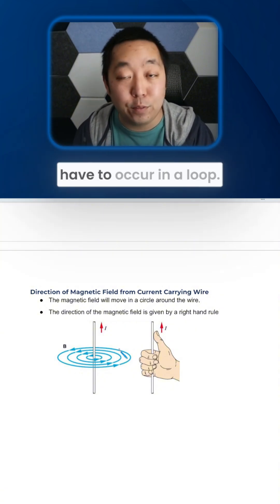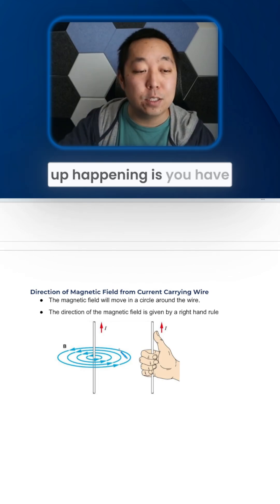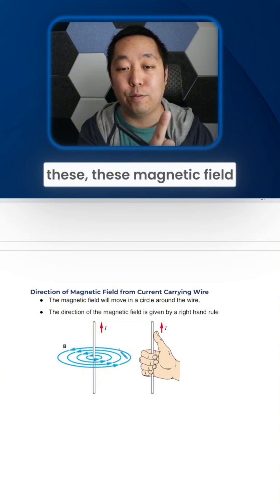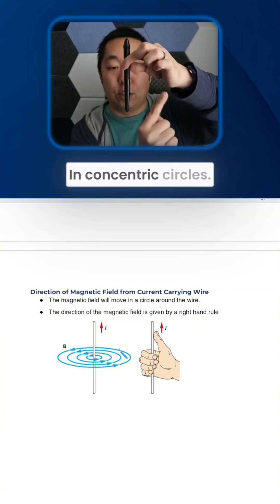Remember, magnetic fields have to occur in a loop. And so what ends up happening is you have a current flowing in a direction and you have these magnetic field lines that go around it in concentric circles.